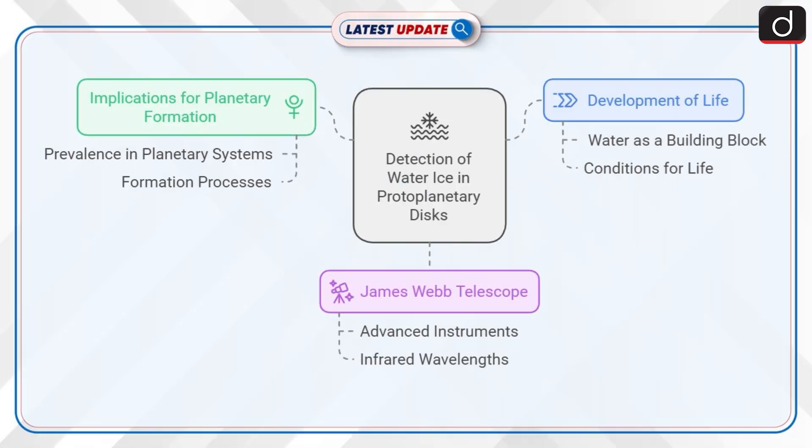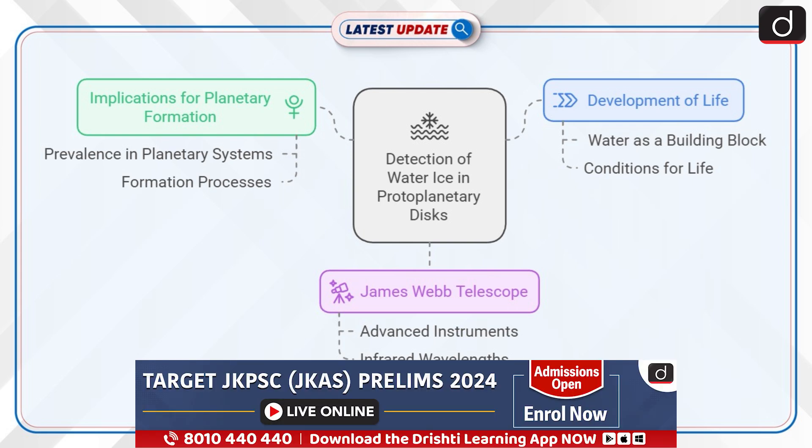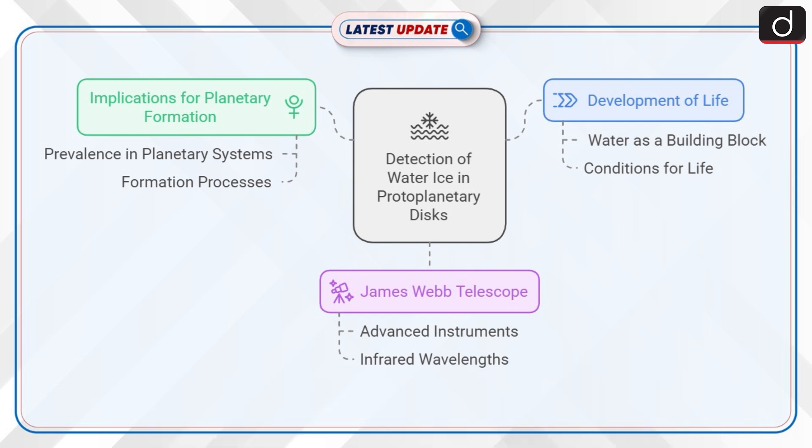This is the first time that frozen water has been detected in the outer regions of a protoplanetary disk. The detection suggests that water ice could be more prevalent in planetary systems across the galaxy, playing a critical role in planetary formation and the development of life. The James Webb Telescope is uniquely equipped with advanced instruments that allow it to observe distant astronomical phenomena in great detail, including infrared wavelengths where water ice signatures can be detected.